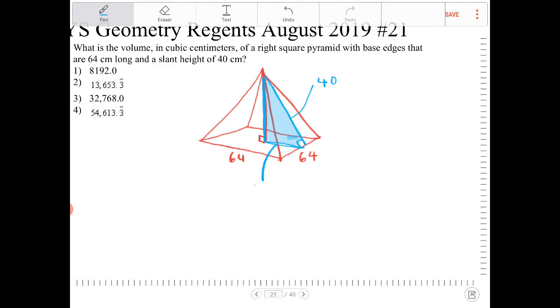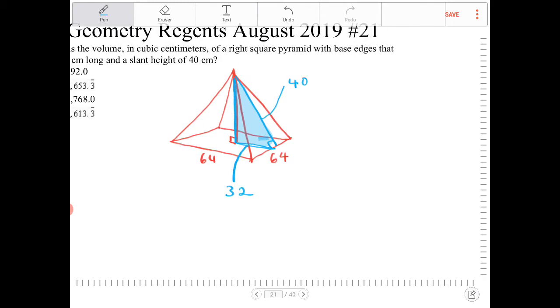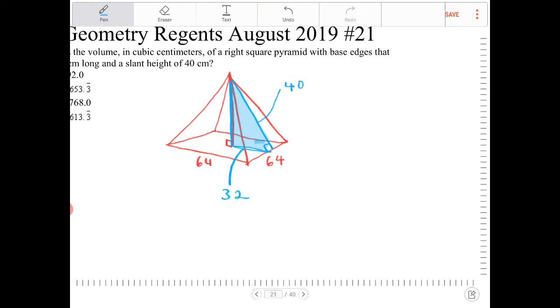So therefore I can apply the Pythagorean theorem to figure out what the height is. So let's call the height H. So H² + 32² = 40².